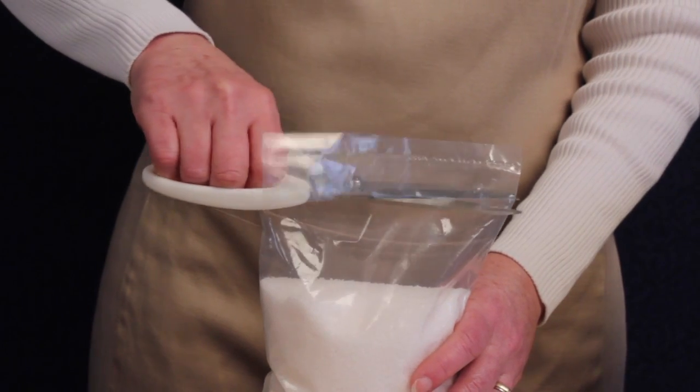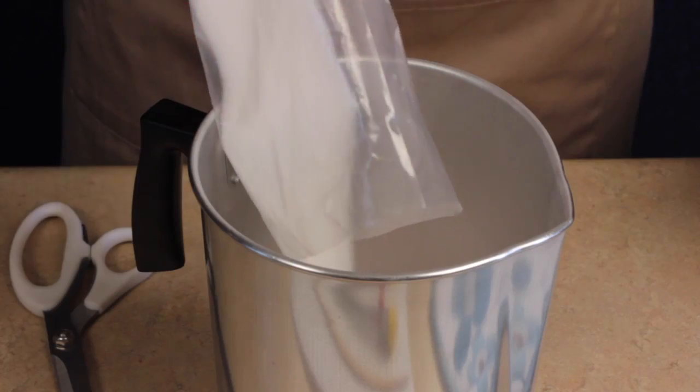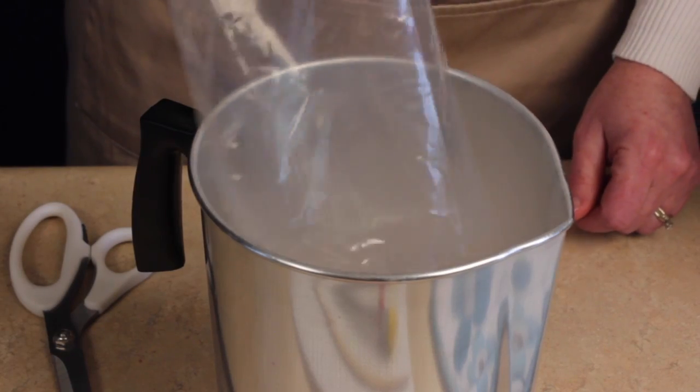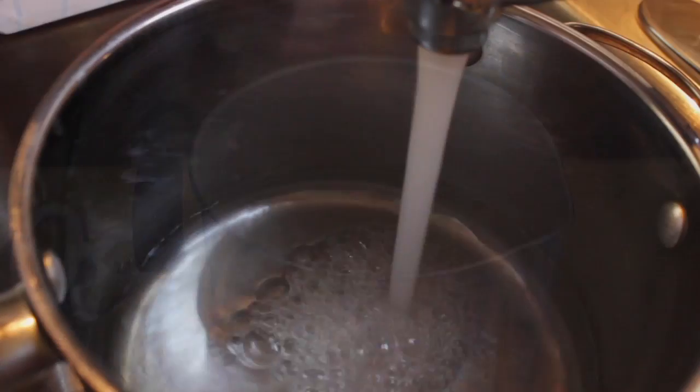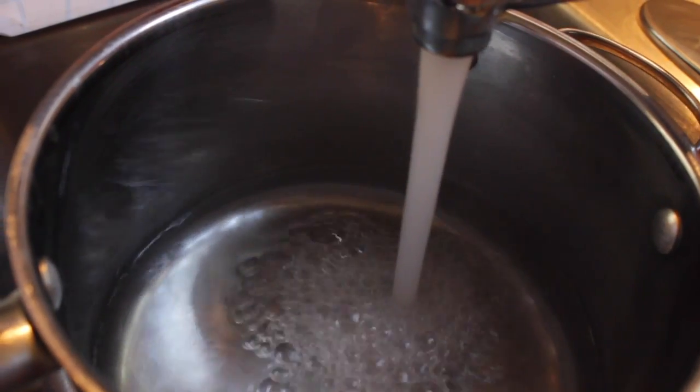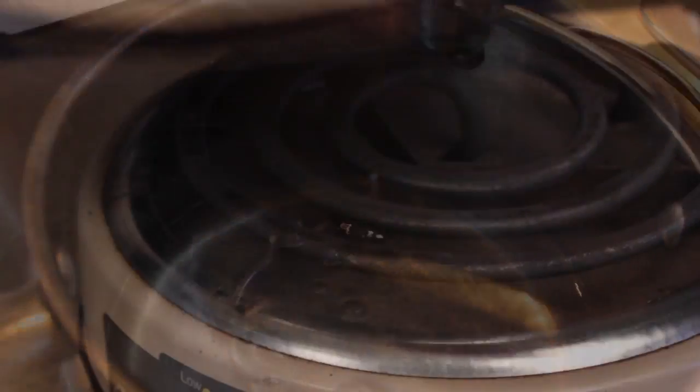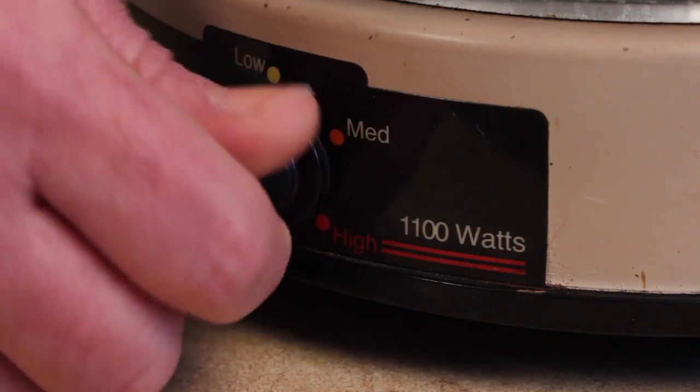Using the scissors, cut open the bag of granulated wax and empty its entire contents into the pouring pot. Fill the kitchen pot with one to one and a half inches of water. Place it on the heat source set to high. The kitchen pot will be acting like the base of a double boiler to melt the wax.